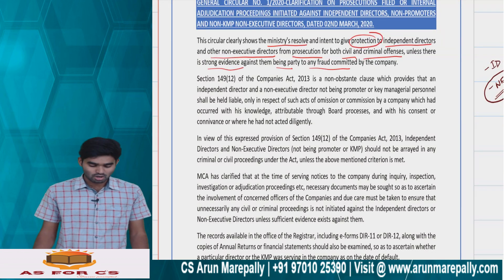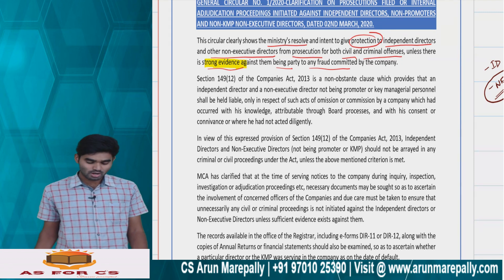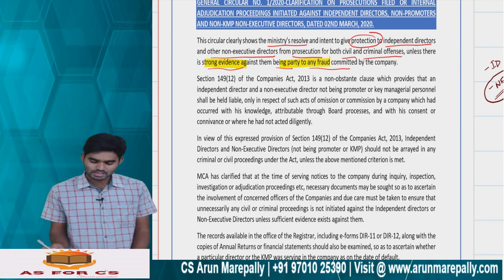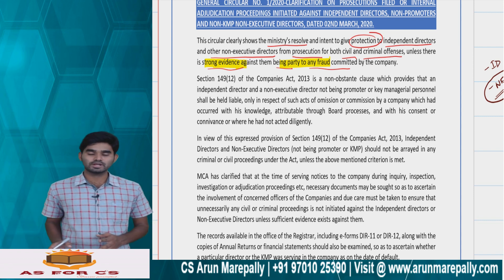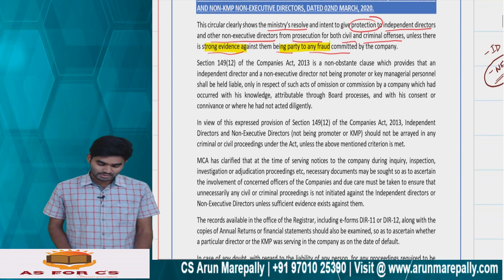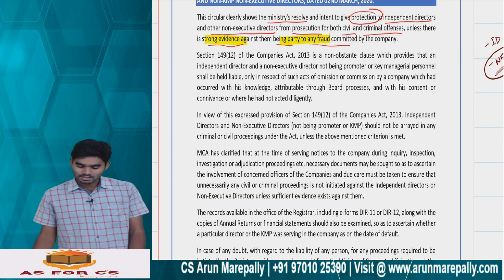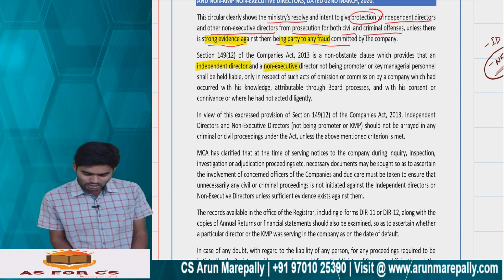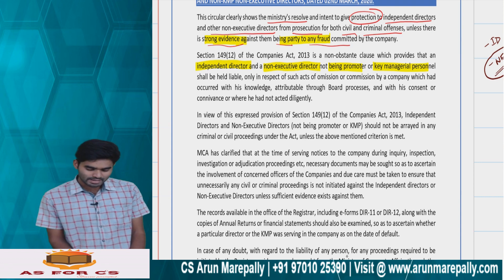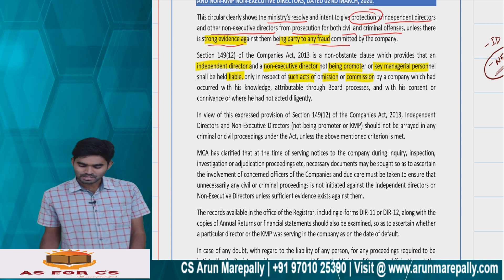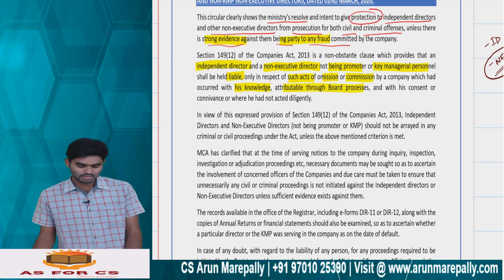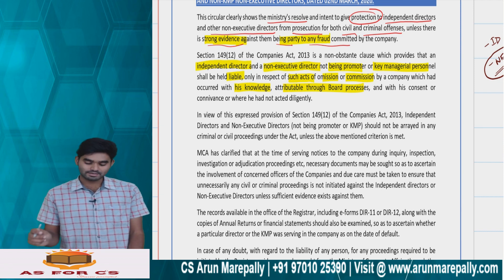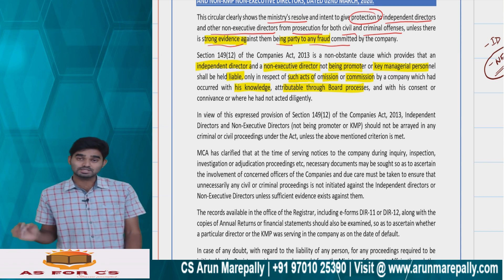The protection is given to independent directors and other non-executive directors from prosecution for both civil and criminal offenses, unless there is strong evidence against them that they were a party to any fraud committed by the company. Section 149 sub-section 12 of the Companies Act 2013 provides that an independent director and a non-executive director not being a promoter or KMP shall be held liable only in respect of acts of omission or commission which occurred with his knowledge attributable to a board process, and with his consent or connivance, or where he had not acted diligently.